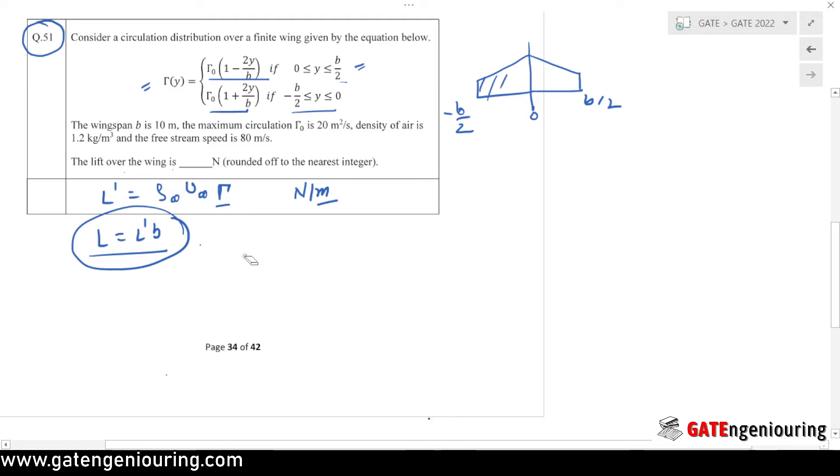The circulation is given by the integral from 0 to b/2 for the right wing, and the equation is (1 - 2y/b) dy, then from minus b/2 to 0, and the equation here is (1 + 2y/b) dy.